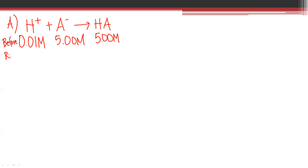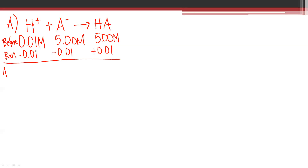The reaction uses up all the protons from HCl. We subtract 0.01 from both reactants and add 0.01 to the acid on the product side. After the reaction, the proton concentration from HCl is zero, the conjugate base is now 4.99 M, and the acid is now 5.01 M. Since this is a buffered solution, I'll use the Henderson-Hasselbalch equation from 8.9 because it makes things much easier.